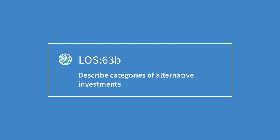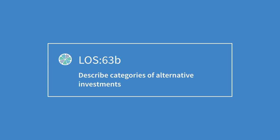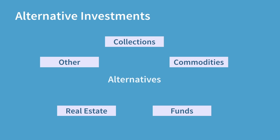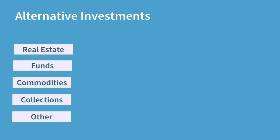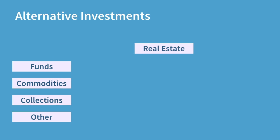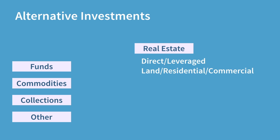Next we need to look in more detail at the categories of alternative investments. First we might consider real estate. Under the banner of real estate as an asset class we might invest directly or with leverage in land, residential property or commercial property. But the more topical investment in this bracket is securitization — referring to the various derivative instruments developed over the past 10 years or so to pool mortgage loans into packages of easy to sell, difficult to price bets on the ability of homeowners to pay their mortgage repayments.